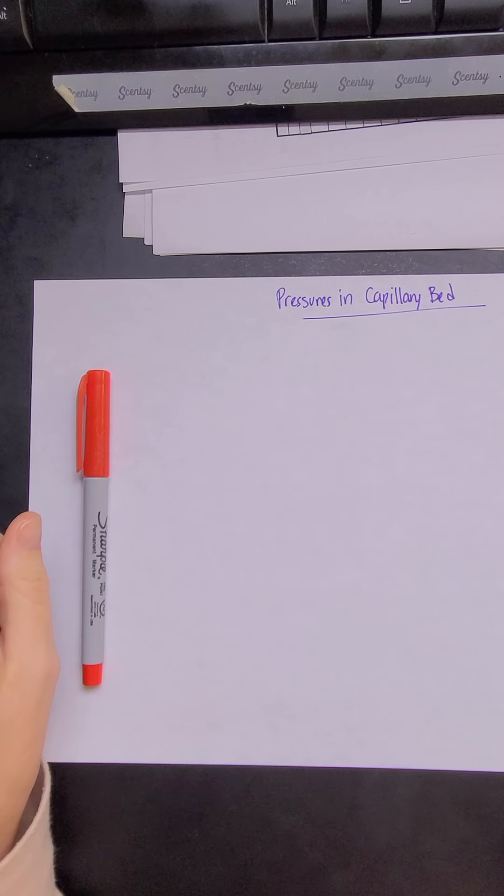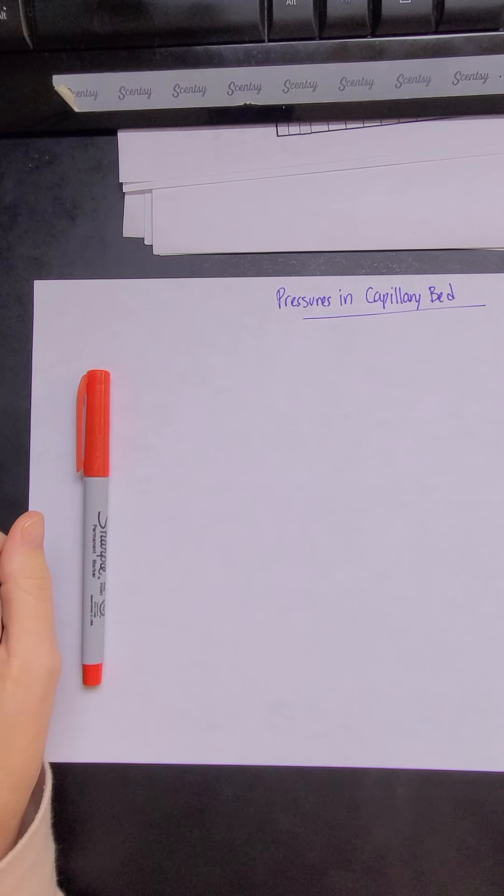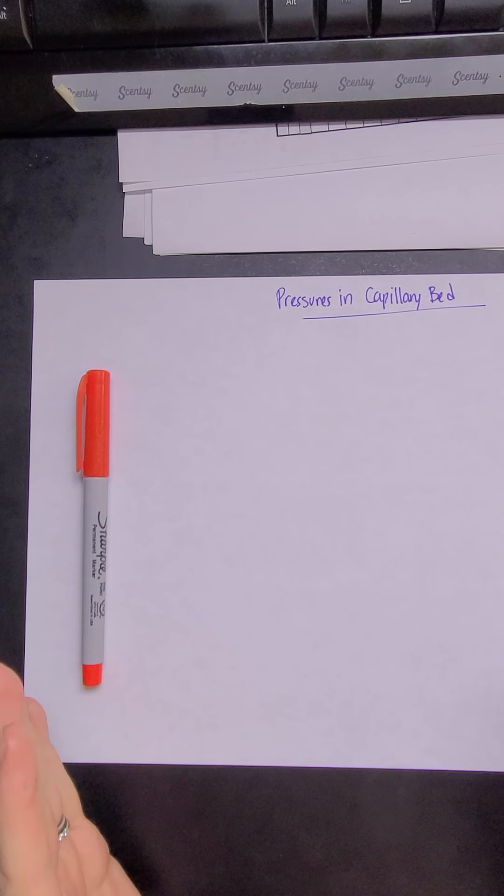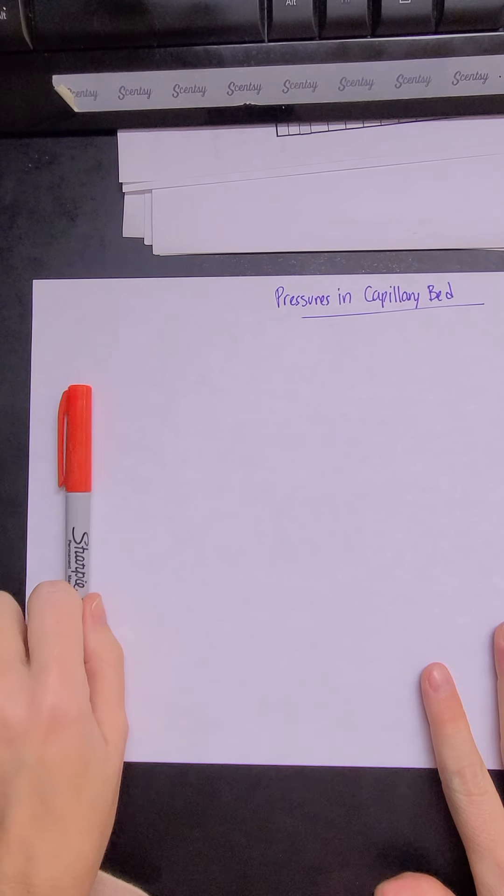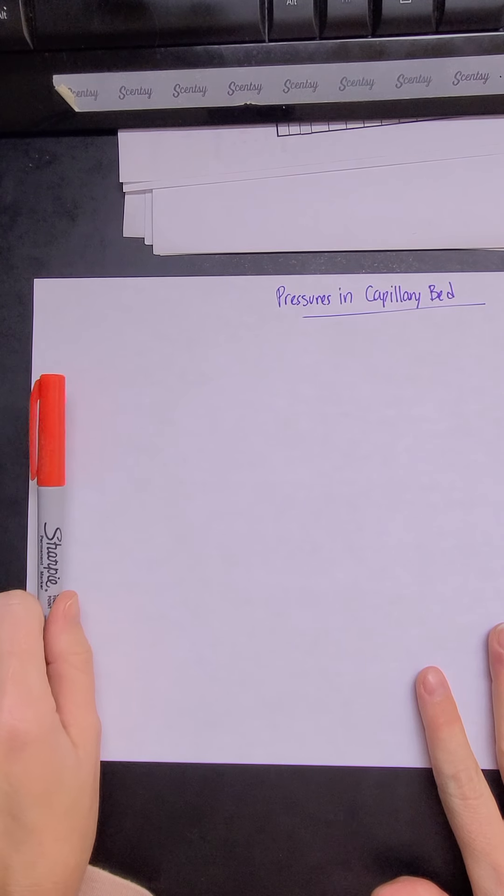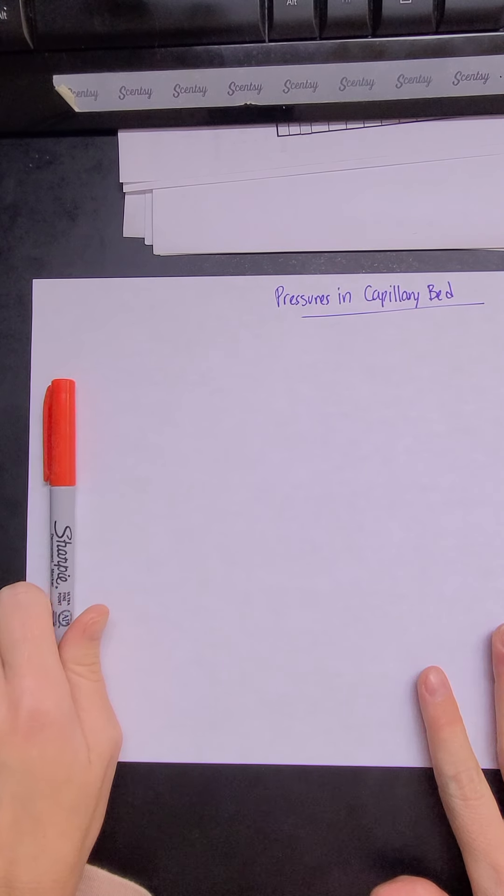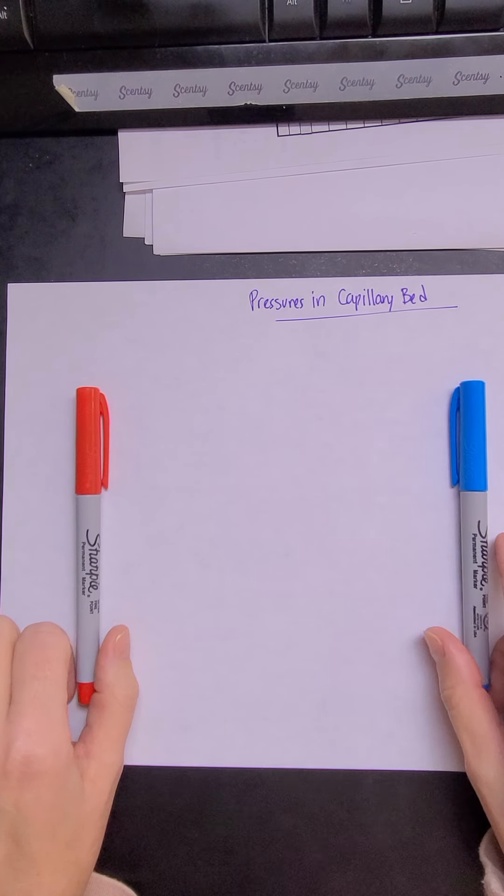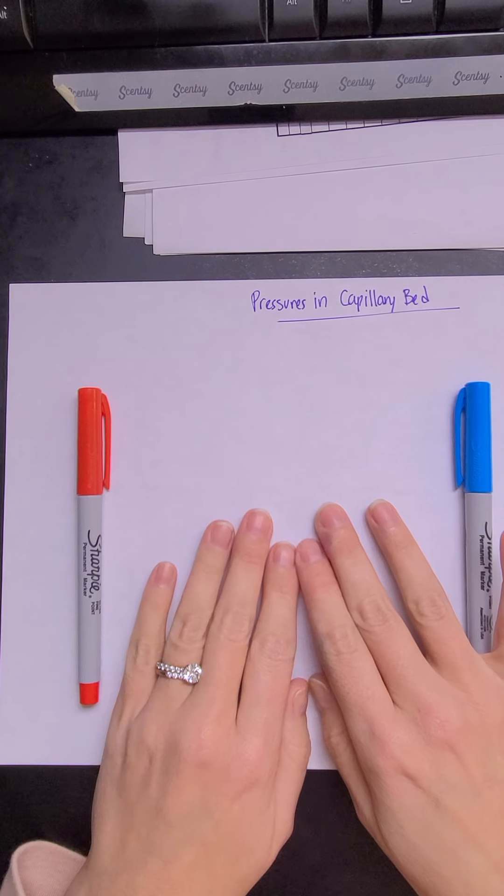I'm going to use the left side of my paper. I'm right left challenged by the way, from all the years of teaching anatomy and always thinking in anatomical position, I'm always backwards with right and left. So this side of my paper, which I believe is the left, is going to be my arterial end and the right side of my paper is going to be my venous end and we'll have some capillaries in the middle.